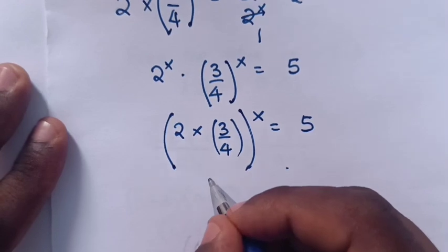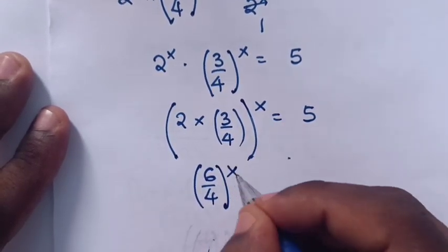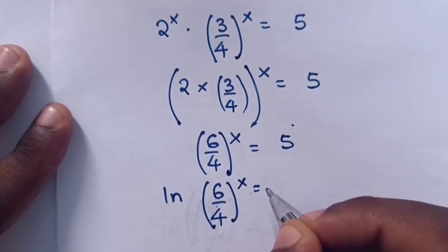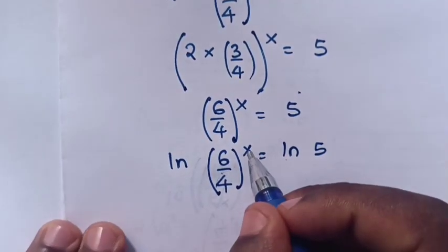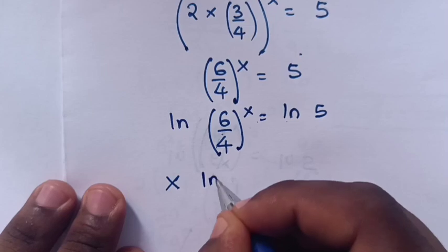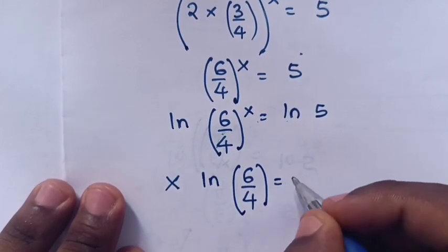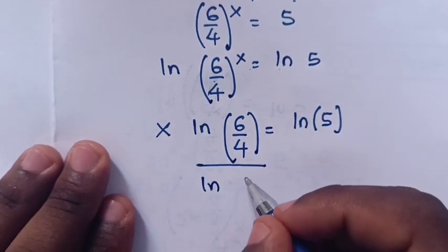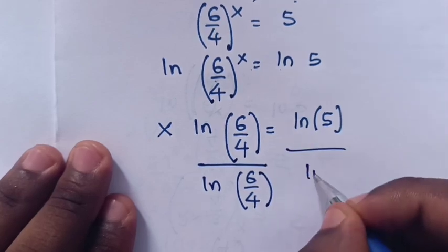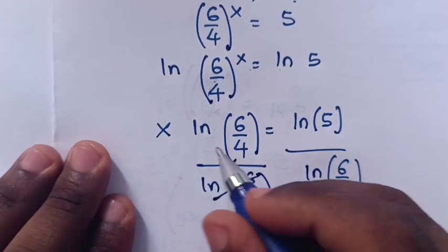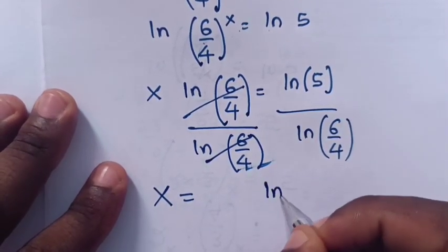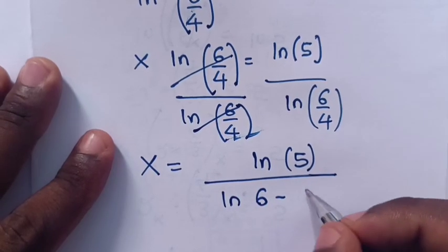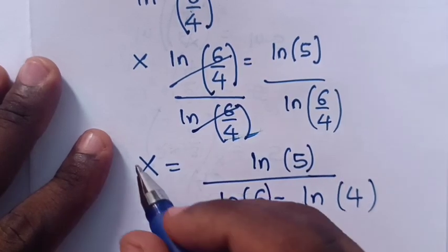When we multiply inside the bracket, it will be (6 over 4)^x is equal to 5. Then we apply ln on both sides: ln((6/4)^x) is equal to ln(5). So x moves down: x·ln(6/4) is equal to ln(5). To find x, we divide by ln(6/4) on both sides and cancel. So x is equal to ln(5) over ln(6/4), which is the same as ln(5) over (ln(6) minus ln(4)) — the same answer.